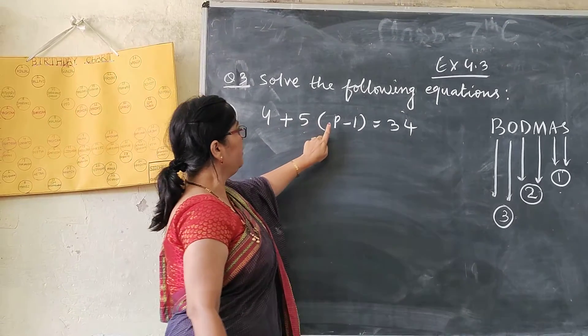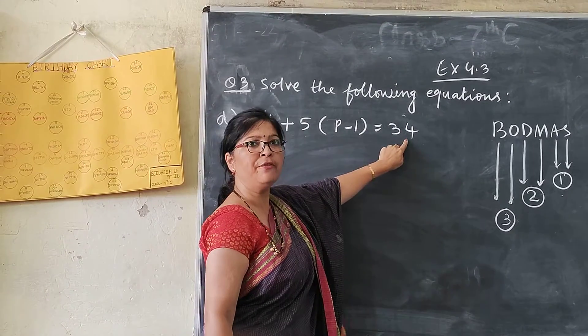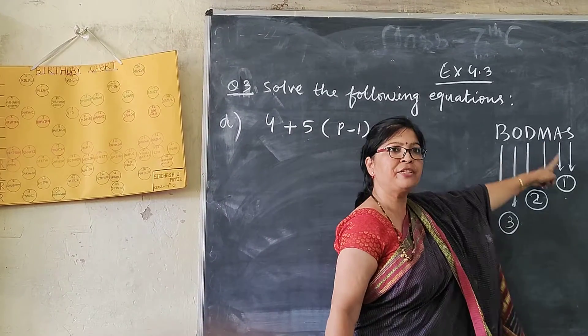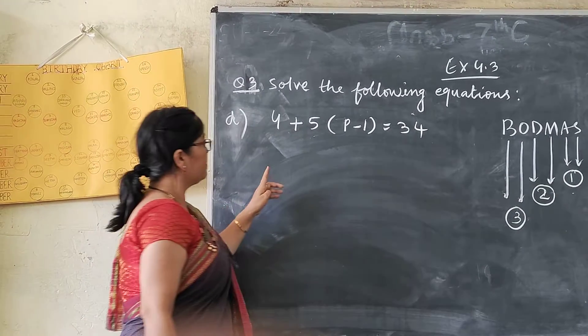4 plus T bracket T minus 1 equals to 34. So first of all we have to remove this addition or subtraction sign. Can you see the addition subtraction sign?